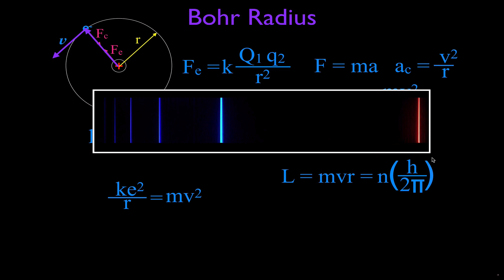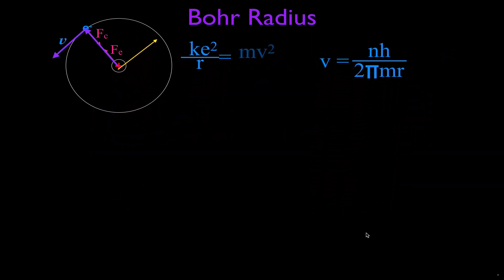Now we have M V R equal to N H divided by 2 pi. We're going to solve these two terms for V and substitute into our earlier equation. So V equals N H divided by 2 pi, and then dividing by M and R gives V equals N H divided by 2 pi M R. We're now going to substitute that into the force equation for V squared, remembering to square everything.